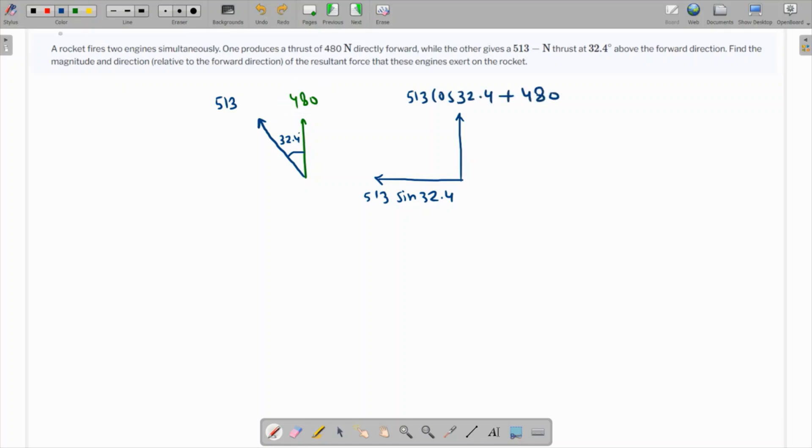You can easily find the resultant and the angle with respect to the forward. The resultant force FR, since the two vectors are perpendicular, is going to be square root of 513 sine 32.4 whole squared plus 513 cos 32.4 plus 480 whole squared.